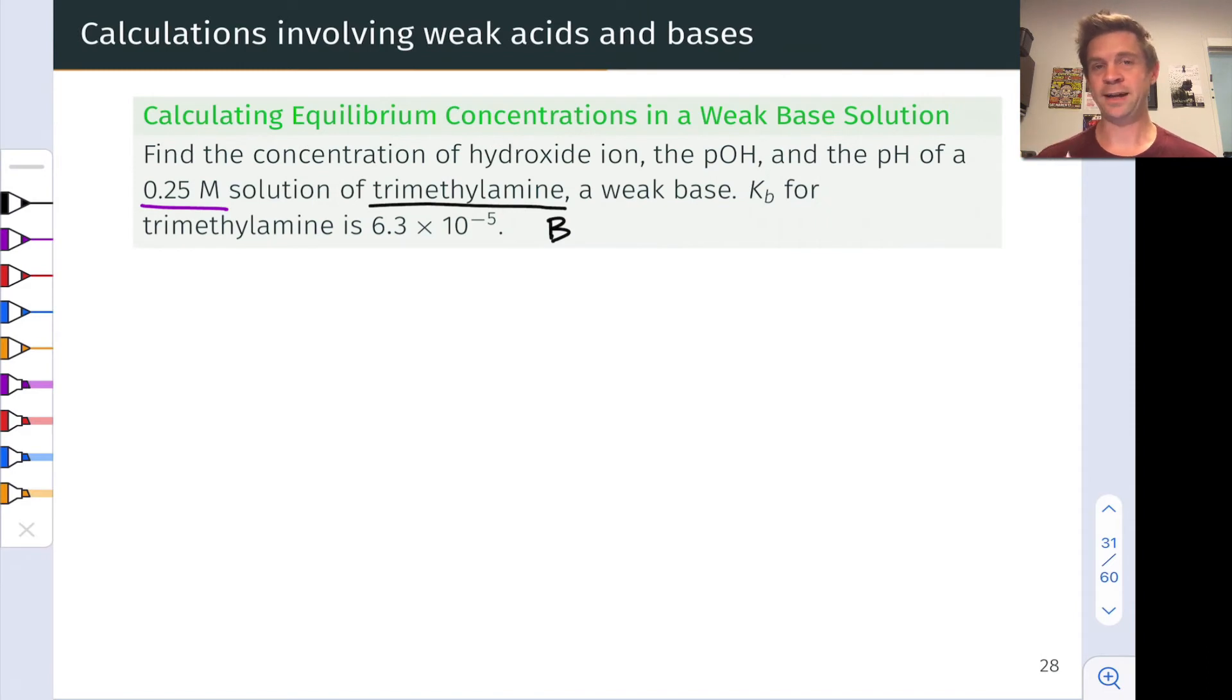Now let's look at the pH of a weak base solution of given initial concentration. In this problem we have a 0.25 molar solution of trimethylamine, a weak base. Let's call it B for generic weak base, and we're given the Kb value of 6.3 times 10 to the negative 5. We want to find the concentration of hydroxide at equilibrium, the pOH, and the pH. This will be a stepwise route from the ICE table calculation through to the pH.